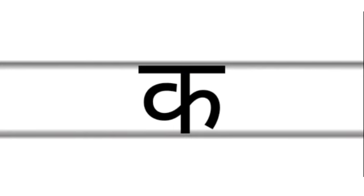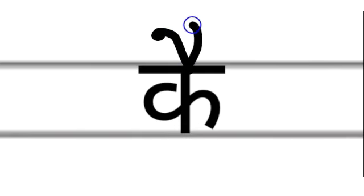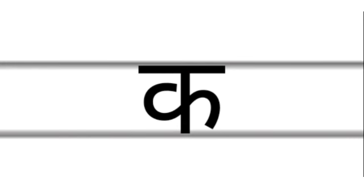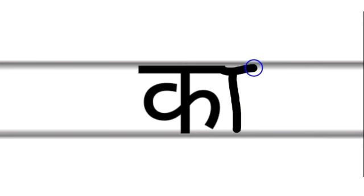Next letter: Ke. How do you write Ke? First, you add a standing line on the right side of the consonant and draw one hook on the top of the standing line. What is this letter, children? Ko.